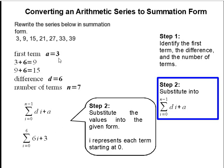So given our values we simply substitute in for n, d, and a and that gets us our summation form.